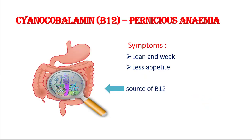Next, vitamin B12 is cyanocobalamin. The deficiency disease is pernicious anemia. Symptoms are lean and weak appearance and less appetite — the person looks very lean and doesn't feel hunger. This vitamin is synthesized by bacteria present in our intestines, so the source of vitamin B12 is bacteria synthesized in our intestines.